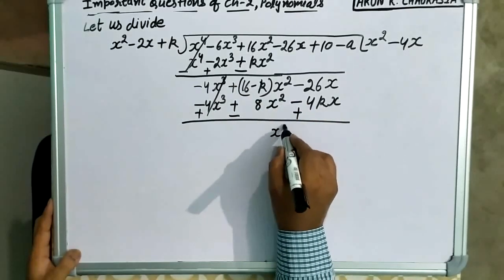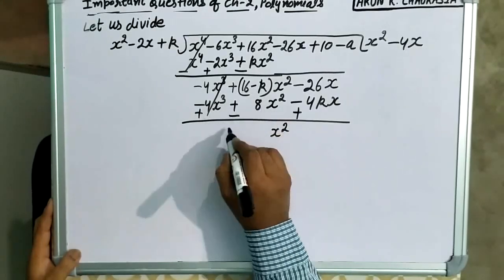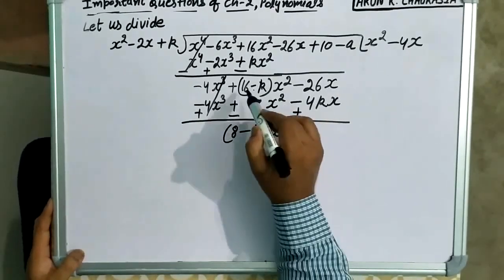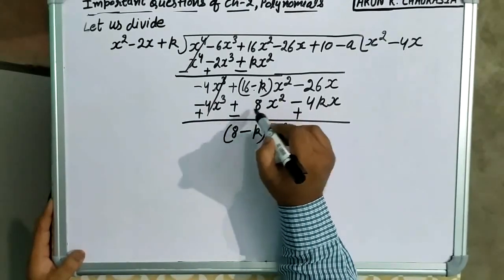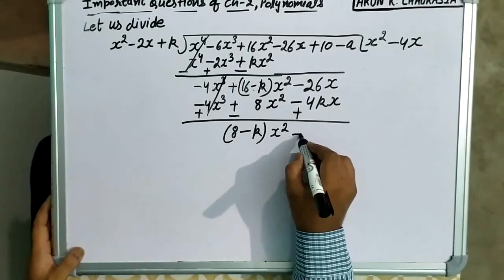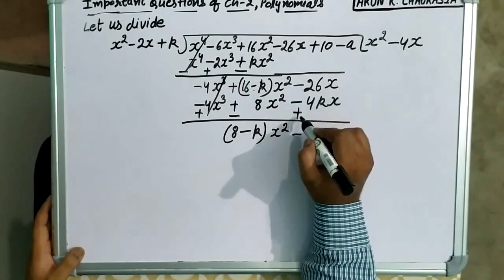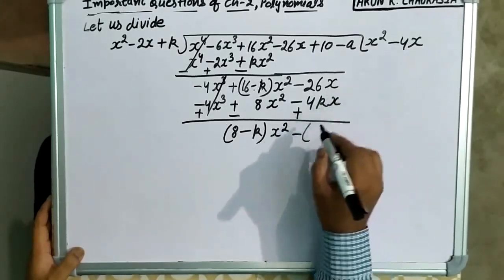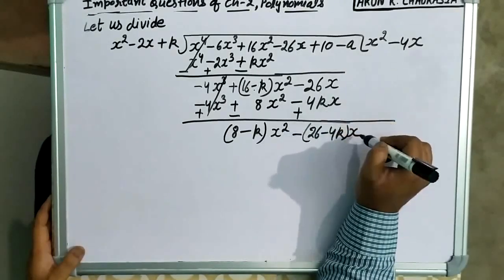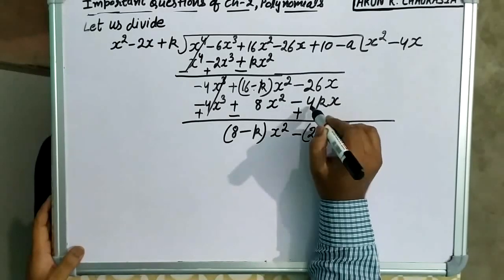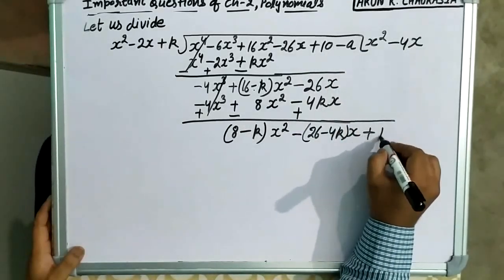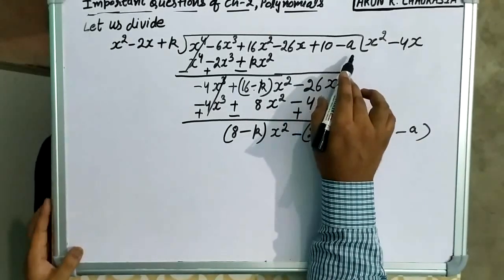यहाँ फिर से x square को common लेना है, तो bracket में बचेगा 16 minus 8, यानि 8 minus k. x square common आया, तो 16 minus k minus 8, तो 16 minus 8 = 8, minus k. यहाँ पर minus 26x, plus 4kx, तो x common आएगा — minus भी common लेते हैं, तो यह 26 plus का हो गया, 4k minus का हो गया. plus 10 minus a — यह 10 minus a एक ही term मानी जाएगी, दोनों ही constant हैं.